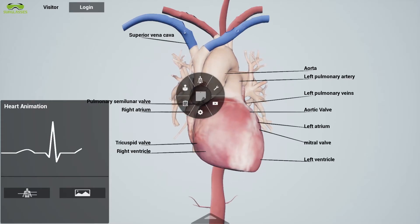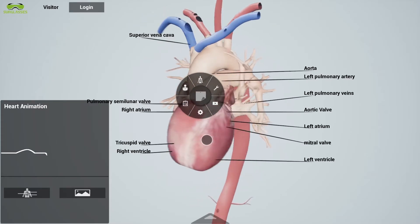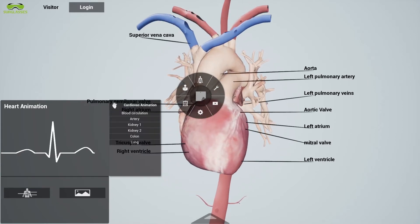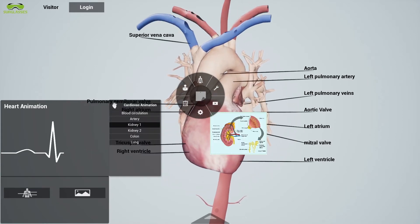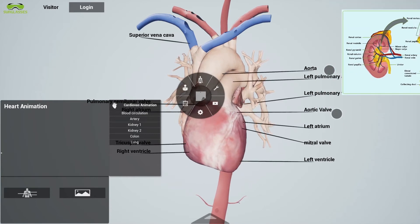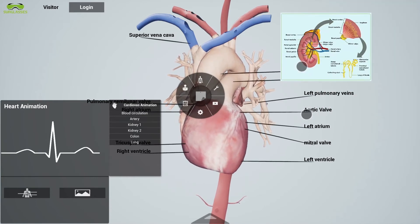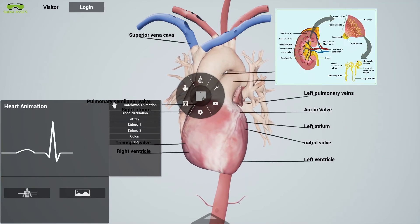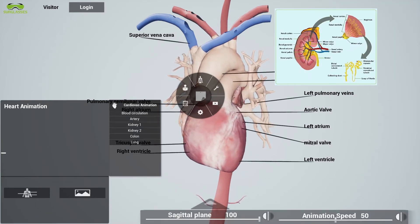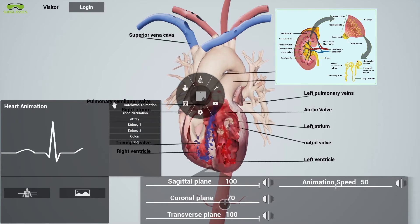Asclepius also has an animation for the beating heart, with the possibility to see blood flow in sagittal, coronal, or transverse view, and to control the speed of the beating heart.